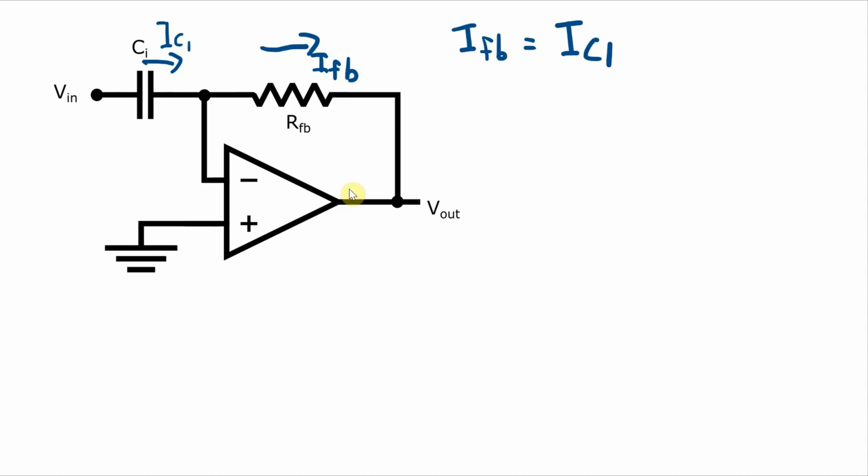The current through this feedback resistor is going to be the voltage across the resistor divided by its resistance. Since the inverting terminal is at the same voltage as the non-inverting terminal, the inverting terminal will be at virtual ground. So that means the voltage across that resistor is going to be zero minus Vout.